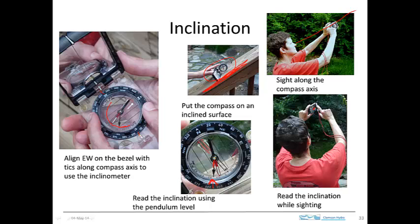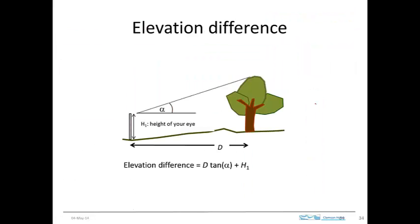And then we read this plumb bob right here using the mirror. So it takes a little bit of practice, but you can read that. If you have good vision, you can read that plumb bob fairly accurately even out at arm's length. So that gives you the inclination measurement. And then to use this measurement in order to calculate the elevation difference, you do as follows.